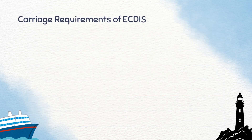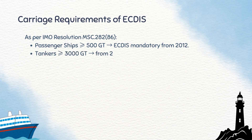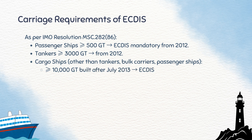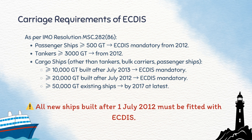Let us look at the carriage requirements for ECDIS, according to IMO Resolution MSC 282(86). For passenger ships of 500 gross tonnage and above, ECDIS has been mandatory since 2012. For tankers of 3,000 gross tonnage and above, it has also been mandatory since 2012. For cargo ships of 10,000 gross tonnage and above built after July 2013, ECDIS must be fitted. Those of 20,000 gross tonnage and above built after July 2012 must also be fitted. Existing cargo ships of 50,000 gross tonnage and above were required to comply by 2017. Remember that all ships built after 1st July 2012 must be equipped with ECDIS.